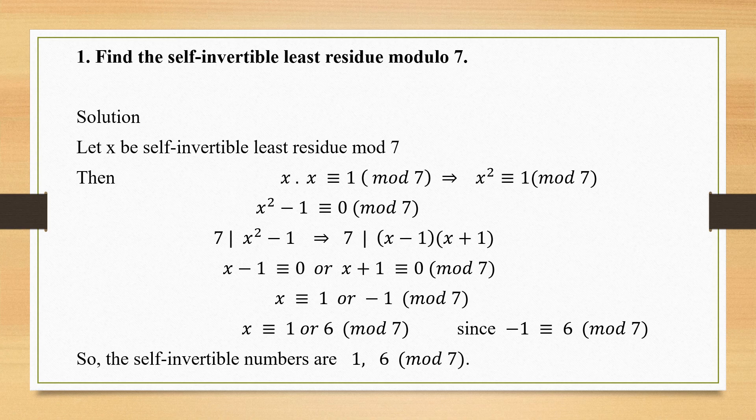First problem: Find the self-invertible least residue modulo 7. Let x be a self-invertible least residue mod 7 — we will find the values of x. Since it is self-invertible, x·x is congruent to 1 mod 7. So x·x can be written as x², meaning x² is congruent to 1 mod 7.